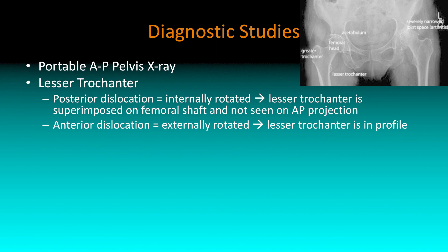Look at the lesser trochanter. In a posterior dislocation, remember the hip is internally rotated, so the lesser trochanter is going to be a little bit behind the femoral shaft — you may not actually see it. So if you're not seeing the lesser trochanter, think about a dislocation. In an anterior dislocation, the leg is externally rotated, so the lesser trochanter is actually going to be more prominent.